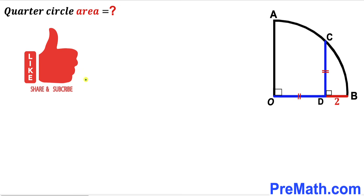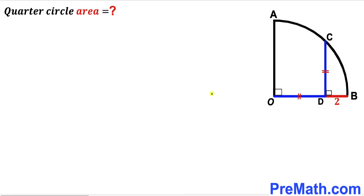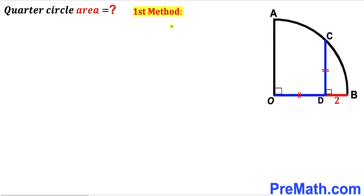Please don't forget to give a thumbs up and subscribe, and keep in mind that this figure may not be 100% true to scale. Let's get started. In this video I'm going to share two different approaches, so please watch till the very end. Here's our first method: let's assume the radius of this quarter circle OB is lowercase r, then radius OA is going to be lowercase r as well.